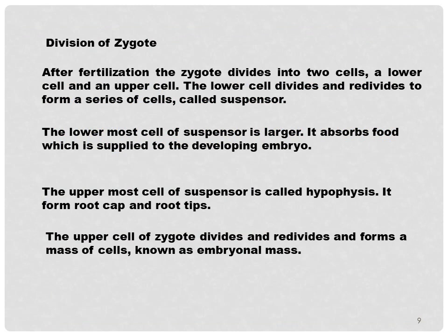Now the division of the zygote: after fertilization, the zygote divides into two cells — a lower cell and an upper cell. The lower cell divides and re-divides to form a series of cells called the suspensor. The lowermost cell of the suspensor is larger and absorbs food which is supplied to the developing embryo, so the suspensor provides food to the embryo through its lowermost cells.